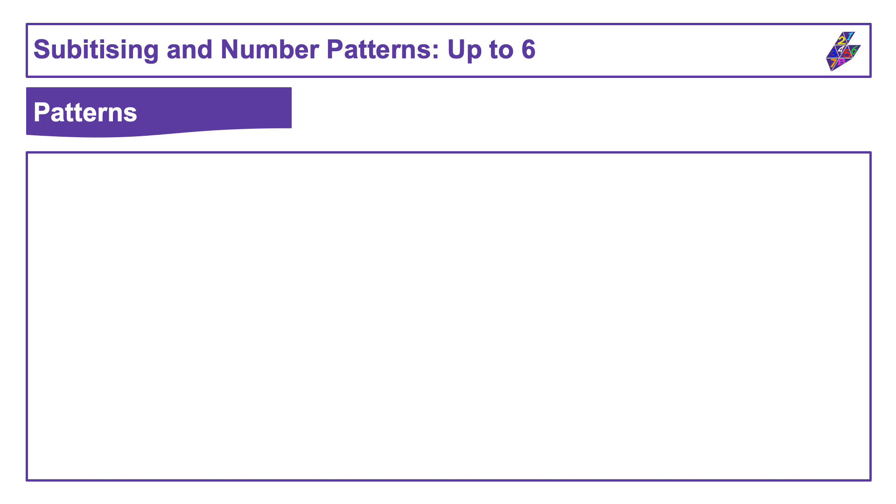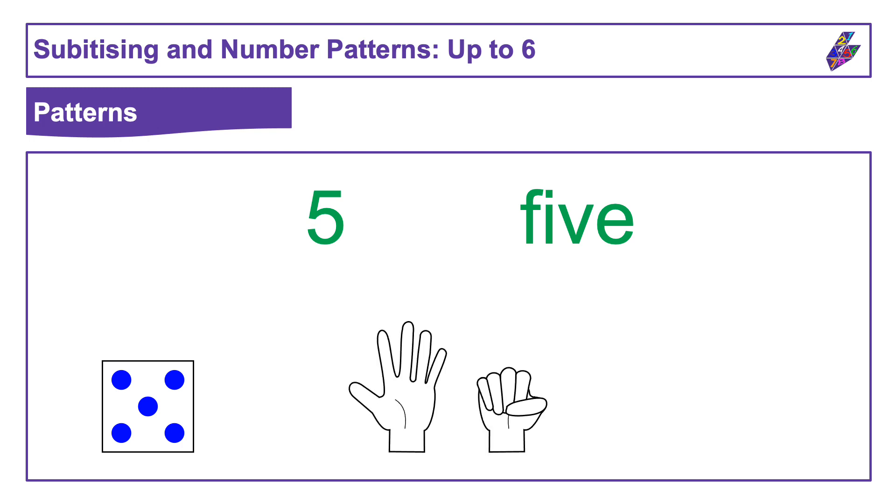You might have noticed that some things seem to be showing one group of five. One dice pattern shows five dots, one hand has five fingers, and one red shape has five circles.